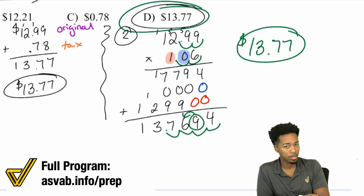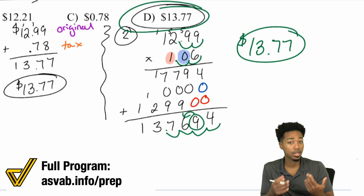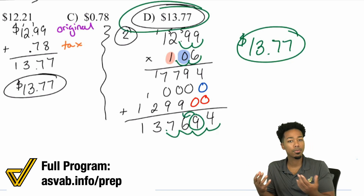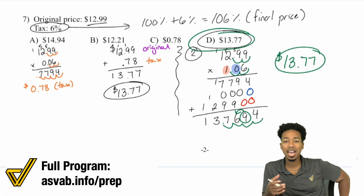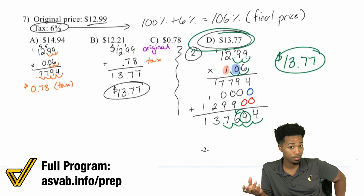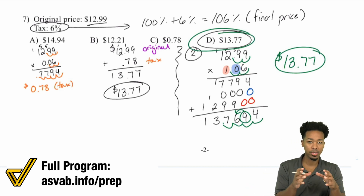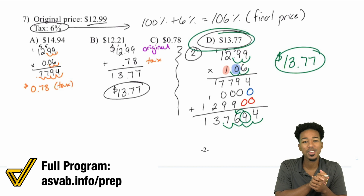I know I went a little fast with the calculations, but the setup is really what matters. At the end of the day, when doing taxes and discounts, think about which approach works better for you: finding the percent and adding or subtracting at the end, or finding the final percentage first for a single calculation step.